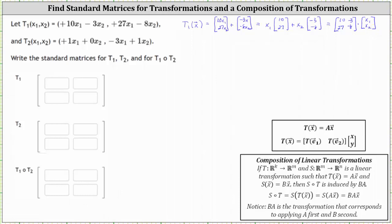Notice now we have T1 of X in the form of matrix A times vector X. Matrix A is the standard matrix or transformation matrix for T1. This is one method we could use to determine the standard matrix for T1.